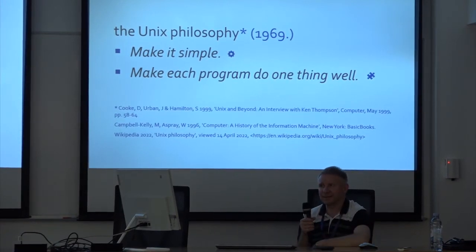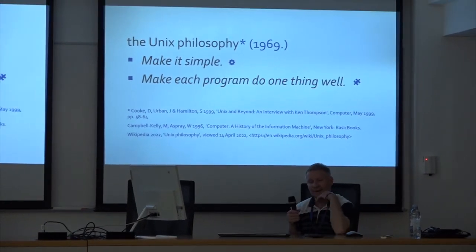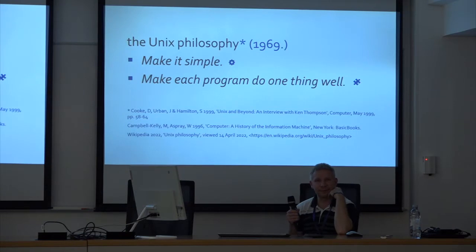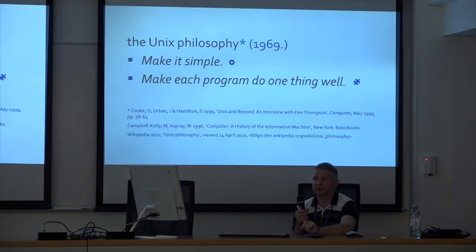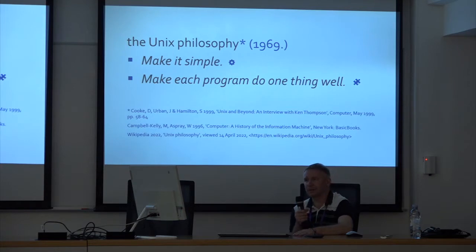In 1969, during a few months, Thomson and Ritchie developed the UNIX operating system. Their design principles: make it simple and make each program do one thing well. That's simplicity, modularity, and reusability.